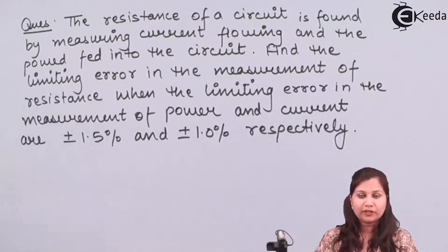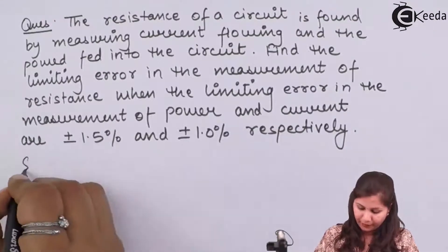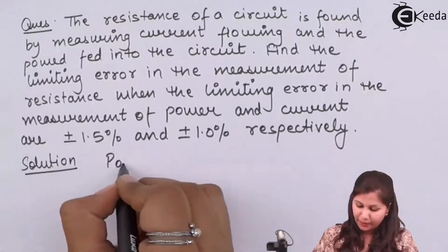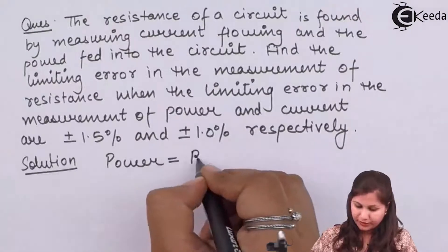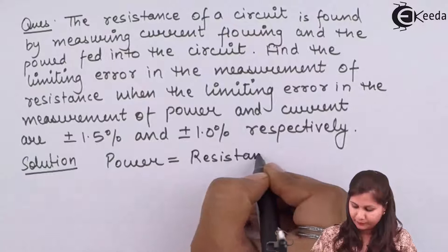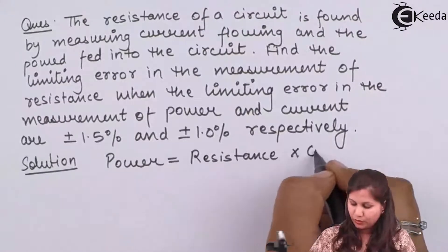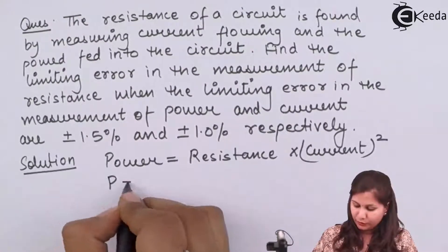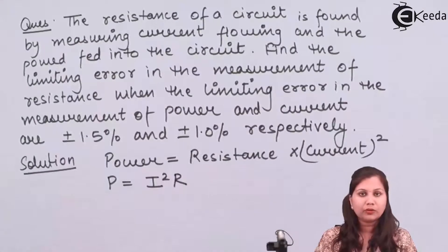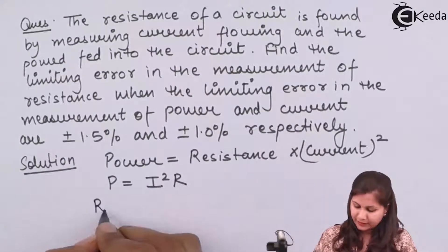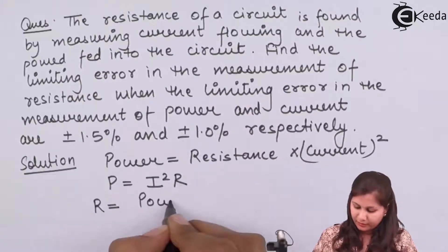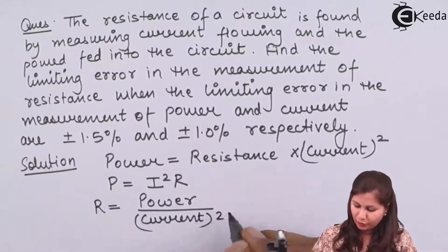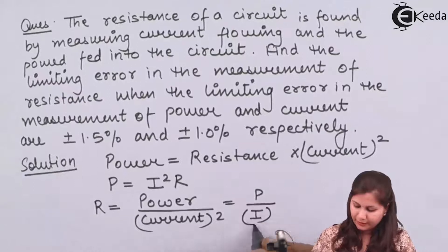Let us try to solve this question. We know that the formula for power is: power equals resistance into current squared, so P = I²R. Now if we want to measure the resistance, resistance will be power divided by current squared, or R = P / I².